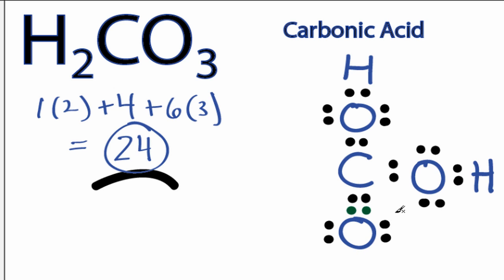By sharing the valence electrons in that double bond, oxygen has eight still, but now the carbon has eight. And we're still only using 24 valence electrons. So we've used all 24 valence electrons, and each of the atoms in H2CO3 has a full outer shell. So that's the Lewis structure for H2CO3.